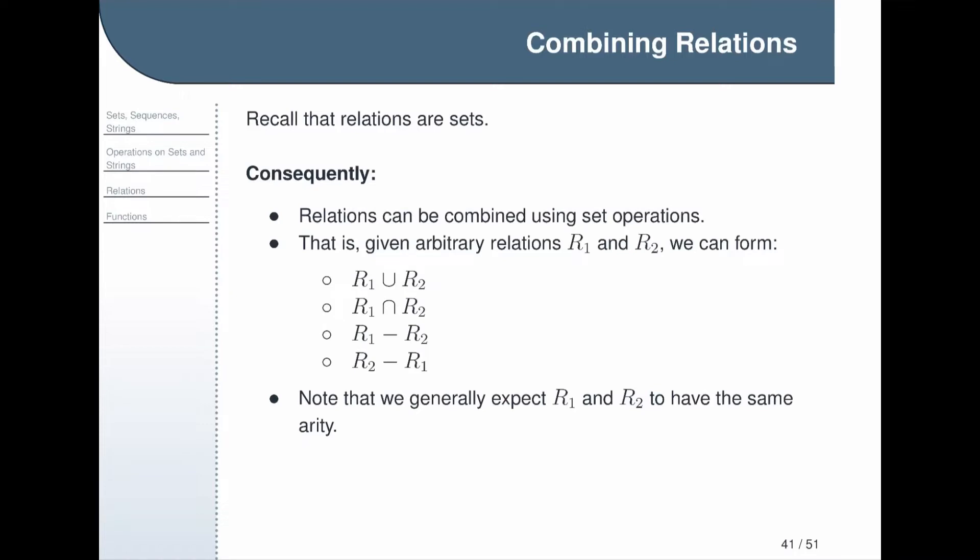That's not an absolute requirement. They're just sets, and you can combine them if you want. But if they do not have the same arity, then the result is going to be kind of weird. If you try to intersect two relations that are of different arity, you're probably going to get nothing in the intersection. So this is just a general note about what, from context, people usually are assuming when we're working with this kind of operation.